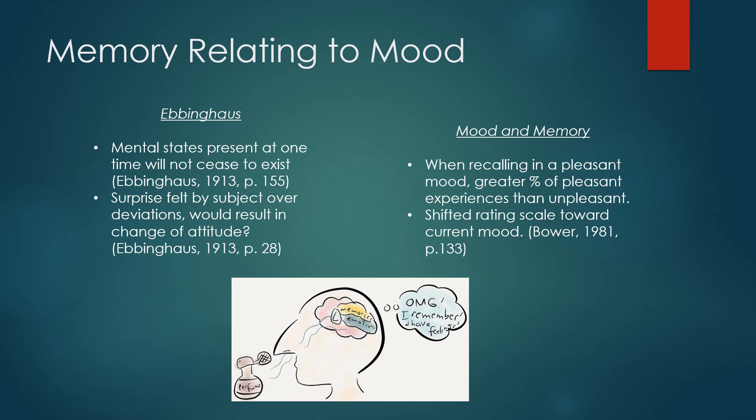After recalling, they rated the emotional intensity of the recalled incidents. It was found that participants shifted their rating scale towards their current mood. This pairs with Ebbinghaus's question of surprise, and if that would result in a change of attitude during the experiment. Although the mood memory experiment is dated back to 1981 and would probably now be seen as flawed due to the reliance on hypnotism, it can still be seen as stemming from and as a future part of Ebbinghaus's work.